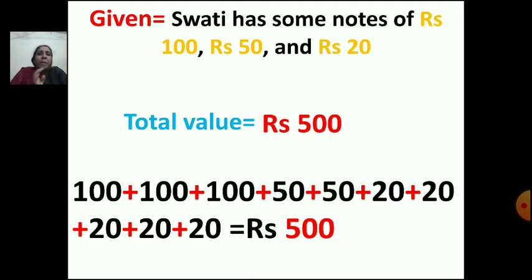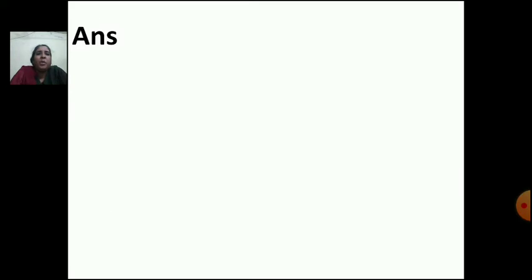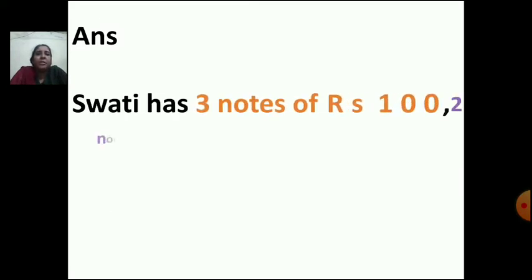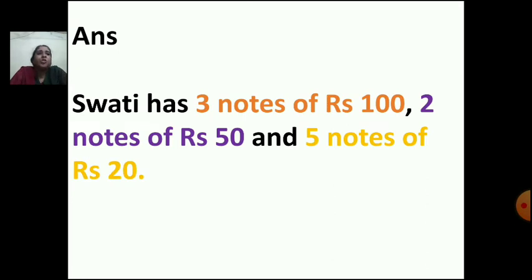And then she has taken 5 notes of rupees 20, that will make 100 rupees. So 300 plus 100 plus 100 makes rupees 500. This is how you show the denomination of the notes. Swati has 3 notes of rupees 100, 2 notes of rupees 50, and 5 notes of rupees 20.